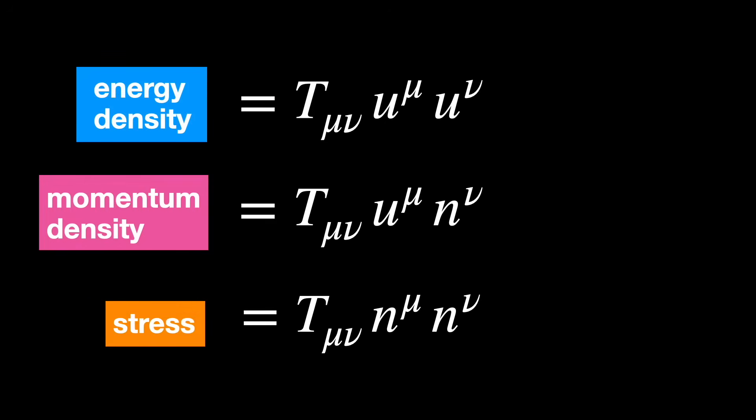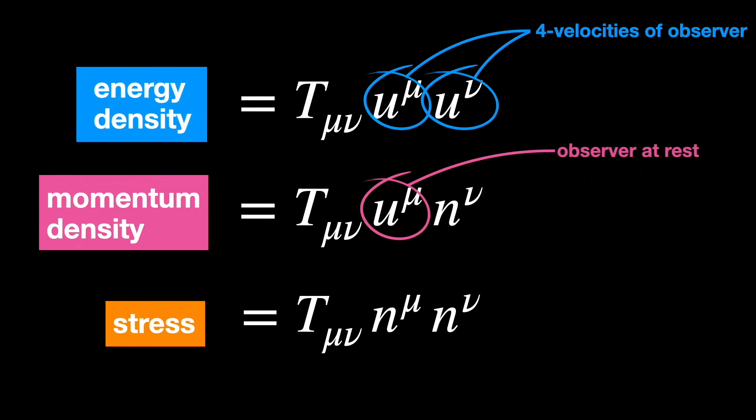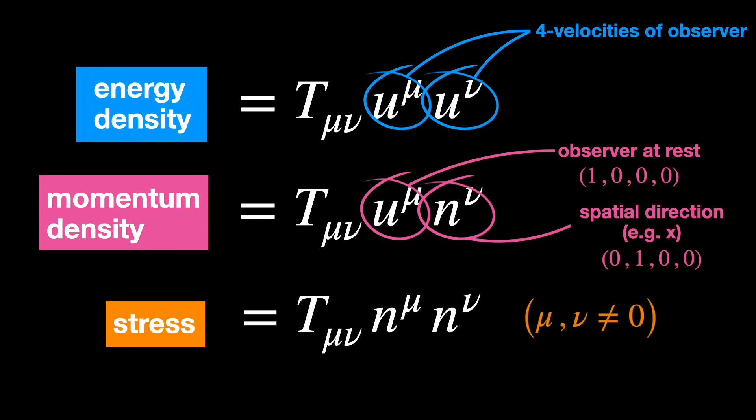Interestingly, this matrix encodes all this information, and if at any moment you want to extract a piece of data from it, all you got to do is contract it with the appropriate basis vectors, or tensors, corresponding to the physical quantity you're interested in.